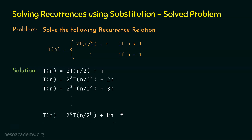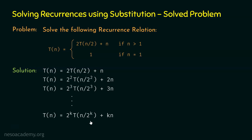We obtained this general form from the pattern. Here we have the power k, and we need to express k in terms of n, because n represents the size of the input. For this, let's assume n/2^k = 1, meaning the base case is reached — that is, we are at T(1). So n/2^k = 1, from which we can find k, and we know T(1) = 1.